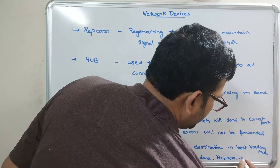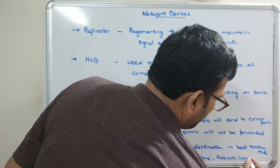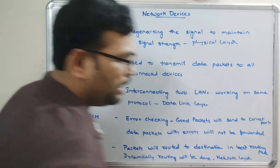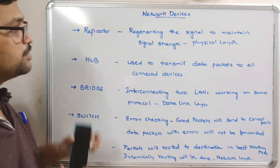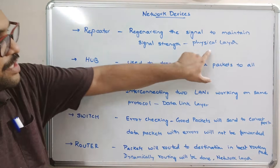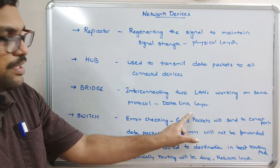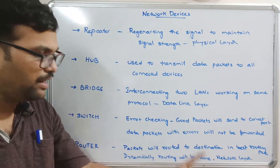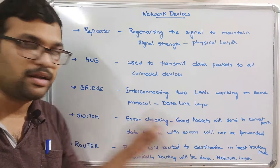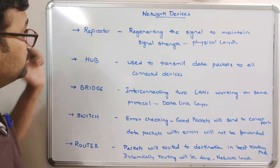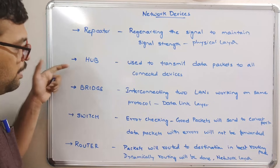To summarize the OSI layers: the repeater operates in the physical layer, the bridge operates in the data link layer, and the router operates in the network layer.